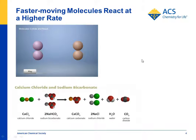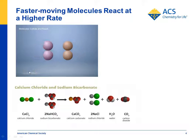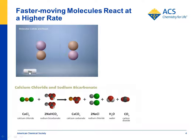So the question for students is: what's going on? You can show them a simple animation that shows two reactants moving slowly, hitting each other, and just bouncing off. But if they move faster, there's a chance they hit with enough force that the atoms come apart and rearrange and rebond to make products. You can show them the analogy with the calcium chloride and sodium bicarbonate reaction: if these reactants hit each other hard enough, they can form products.